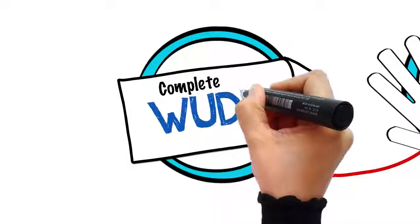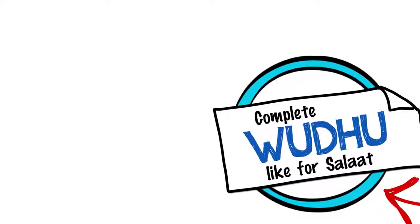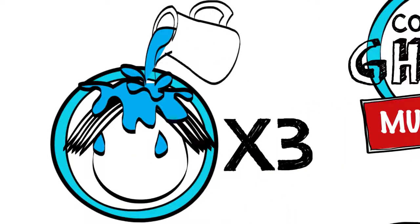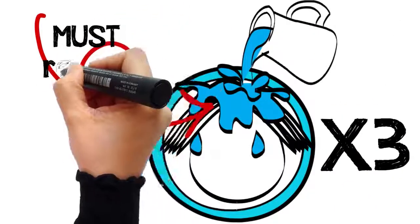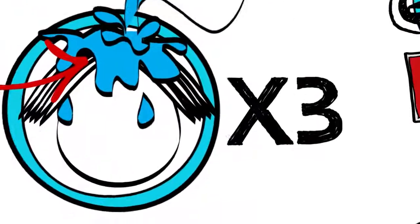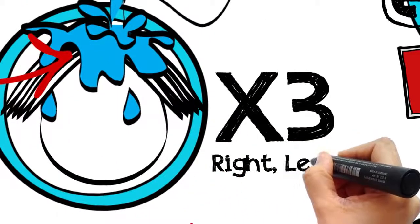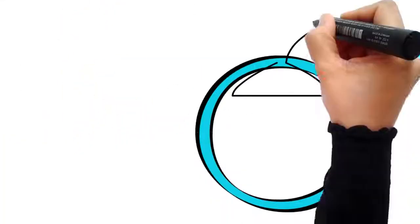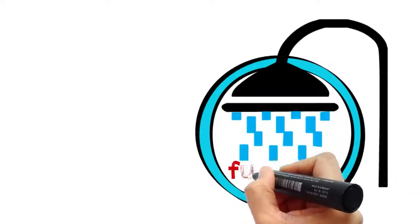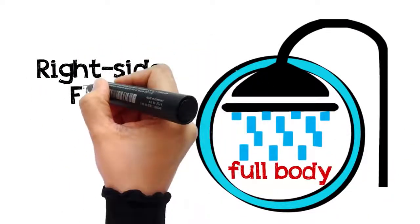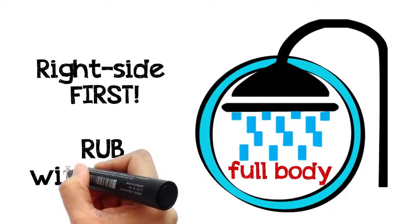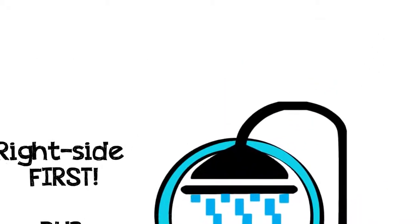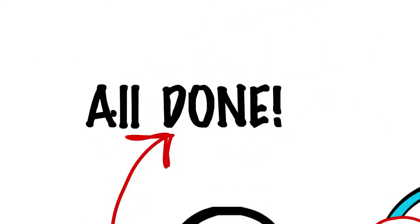Then make a complete Wudhu just as you would for prayers. Then pour water over your head three times, rubbing and making sure that it thoroughly reaches your scalp. Some scholars said three times means once on the right, next on the left, and then in the center. And then pour water and wash the entire body, beginning with the right side then the left, while rubbing it with your hands so that you are sure you haven't missed any part. So these are the etiquettes of the complete Ghusl.